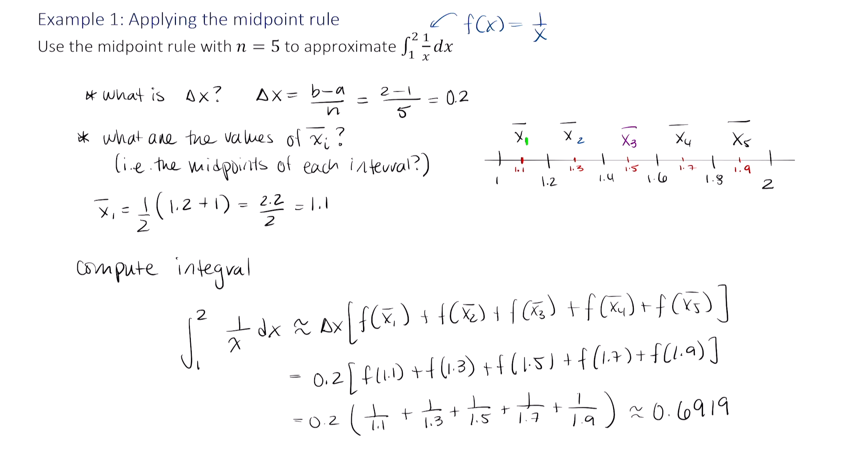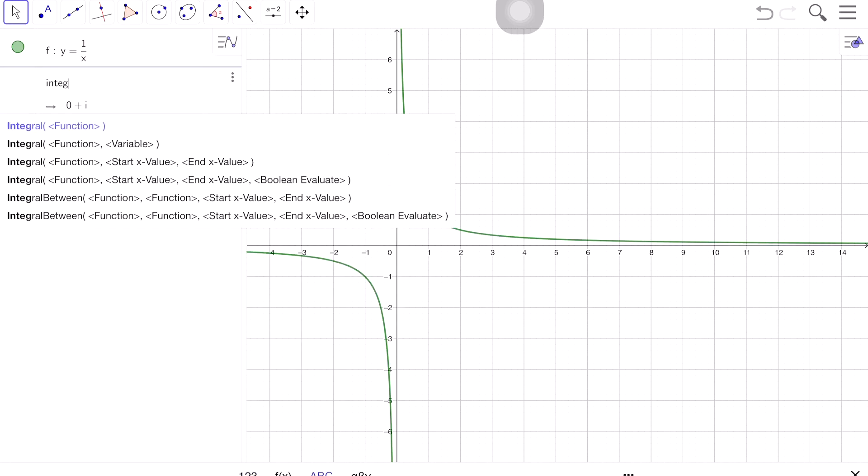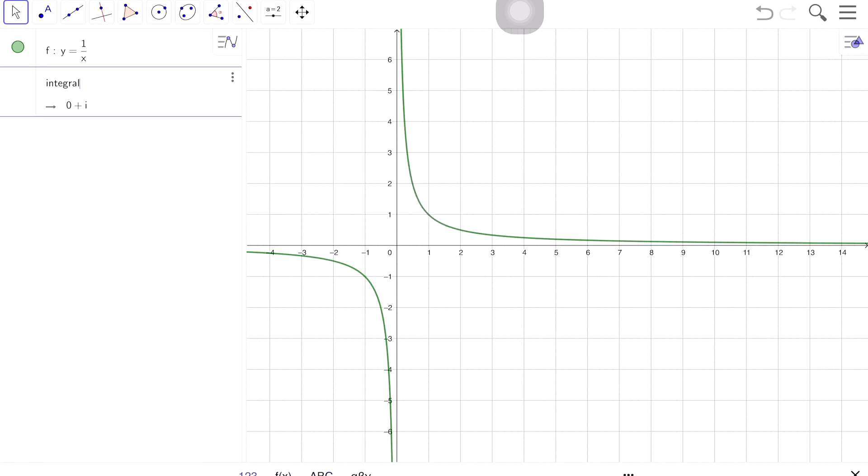And if you want to see how close you are, let's open up GeoGebra. So let's type in y equals 1 divided by x. And then we're going to type in the word integral. And then, of course, parentheses. And we're going f. Oops, that's a prime. Comma. And we want from 1 to 2 and hit enter.